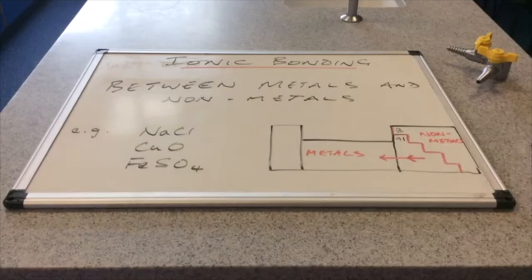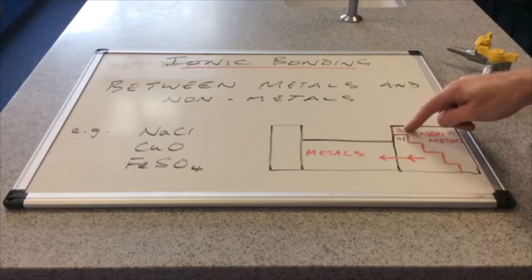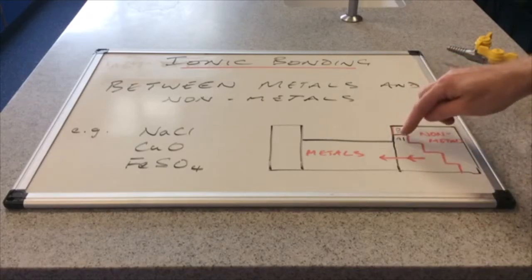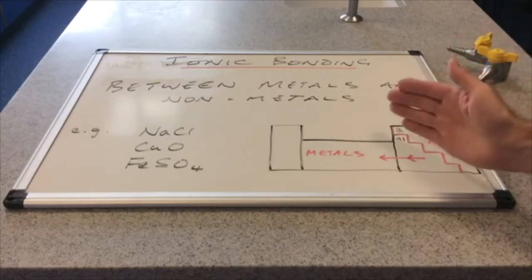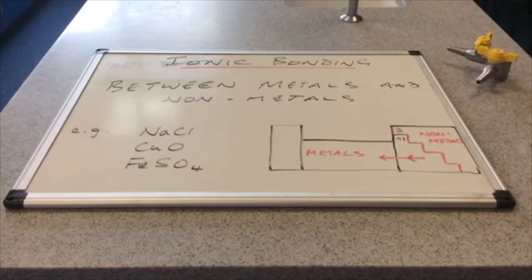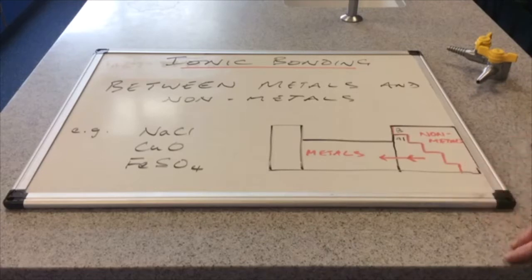And just in case you're not sure where the metals and non-metals live on the periodic table, there's a dividing line that starts at group 3. So I've put boron, that's on the non-metal side of this dividing line. And aluminium is on the metal side of the dividing line. So anything to the right of the dividing line is a non-metal. Anything to the left of this line is a metal.